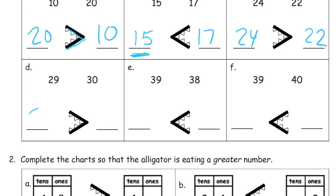And we've got 29 and 30. 30 is greater, so it gets eaten by the alligator. And 30 is greater than 29. Say it out loud. And here we go.